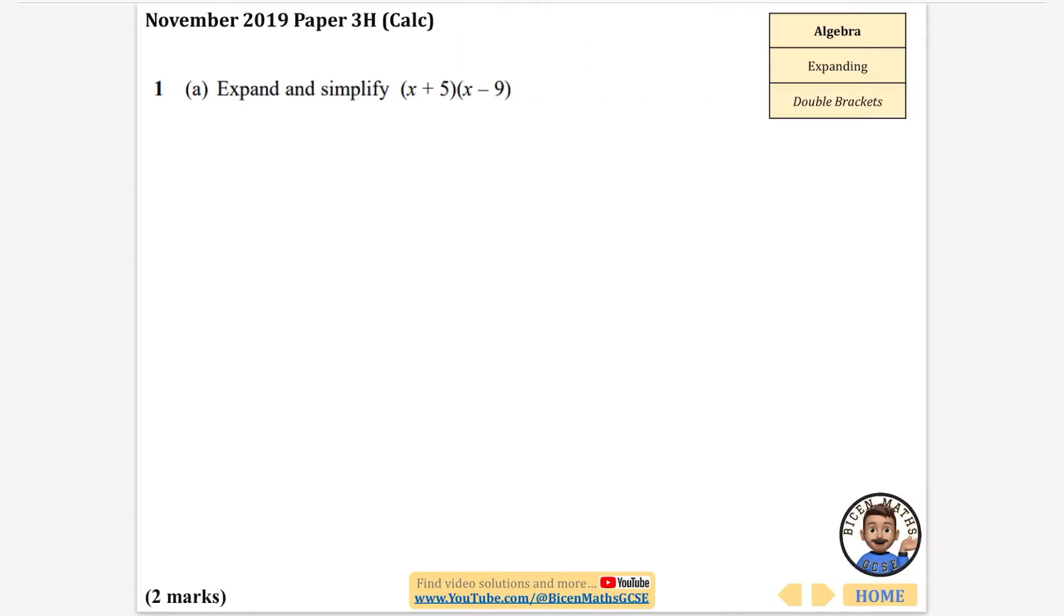Okay we're going to do the only, I think there's only two on double brackets. So you can probably just do whatever method you prefer but x times x is x squared, x times minus 9 is minus 9x, 5 times x is 5x and 5 times minus 9 is minus 45. Now minus 9 plus 5 is minus 4. You could obviously check that on your calculator. So our answer for this is x squared minus 4x minus 45.